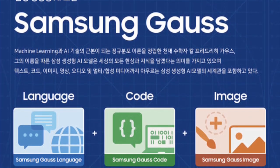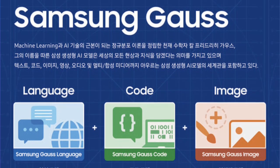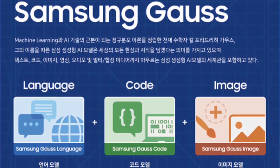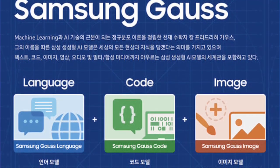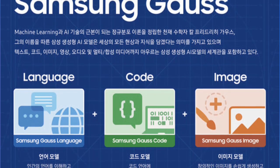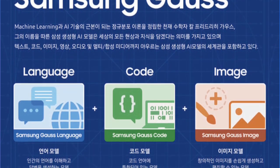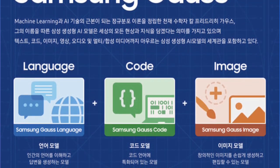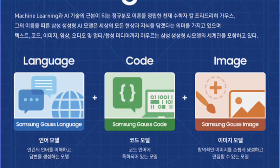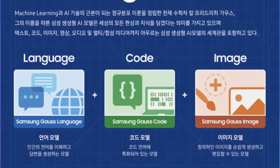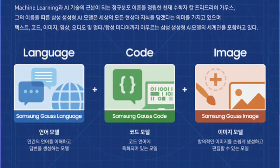The company revealed that its generative AI model consists of Samsung Gauss Language, Samsung Gauss Code, and Samsung Gauss Image. It is named after Karl Friedrich Gauss, the legendary mathematician who stabilized normal distribution theory, which is the backbone of machine learning and AI.